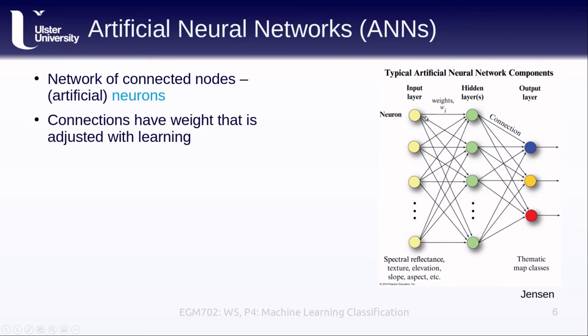Each of the different neurons are connected with a weight that is adjusted as we learn, so we can have more or less communication between particular neurons. This is one of the things that is tweaked as we train up our neural network.